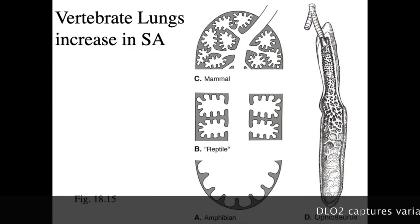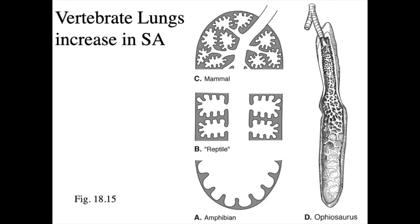Just a reminder that surface area has evolved across the lungs of vertebrates from low metabolic rate amphibians with simple lungs that are basically just a sac to the very high metabolic rate mammals with very complex lungs with millions of alveoli. This is part of what DLO2 captures, that variation in surface area.